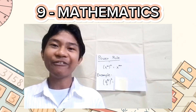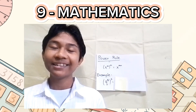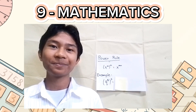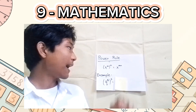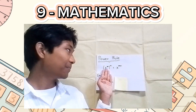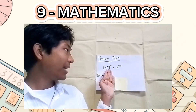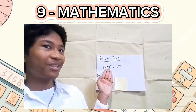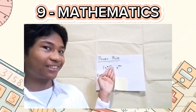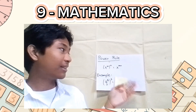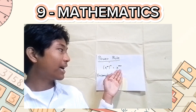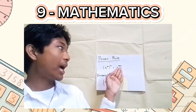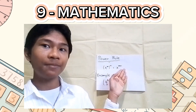We are already halfway there. Now let us tackle the third law, the power rule. Here we have x raised to m raised to n, so the exponent is also raised to an exponent. So if we will try to simplify this, we will have x raised to m times n.